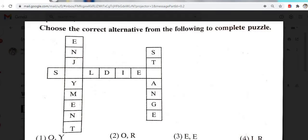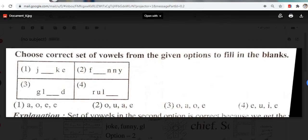I didn't understand this question. Can I read? Yes. Choose the correct alternative from the following to complete puzzle. Now we have E-N. E-N-J-O-Y. Enjoy. Then S-O-L-D-I-E. Soldier. R is there. Then S-T-R-A-N-G-E-R. Stranger. Strange. Then option number. Which option is there? Option number 2. 2-O-R. Right.